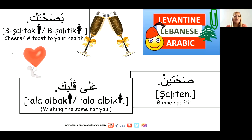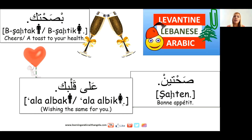How do you say 'cheers' or 'to your health'? 'Bisahtak' — to your health, addressing a male; 'bisahtik' — to a female. When you want to say 'bon appétit,' we have 'sahten,' which means 'two times to your health' — because 'sahha' means health. In reply, you should say 'ala albak' — literally 'on your heart,' meaning 'right back at you' or 'I wish the same for you.' 'Ala albak' addressing a male, 'ala albik' addressing a female.